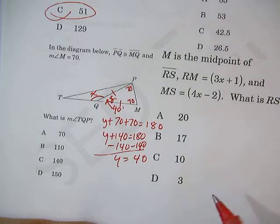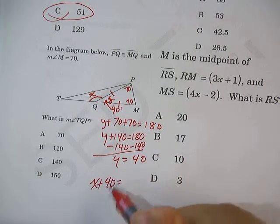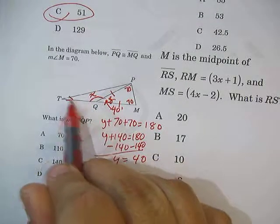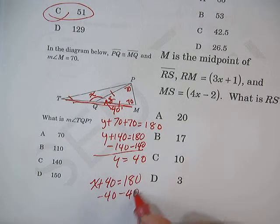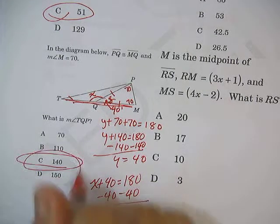Well, these two have to be supplementary. You really don't have to do an equation, but you can do it. X plus 40 have to be 180 degrees because they make a straight line when you combine them. Here's my straight line right here. Subtract 40 from both sides and you get X equals 140. And your answer is C.